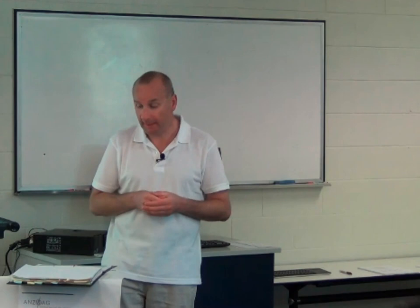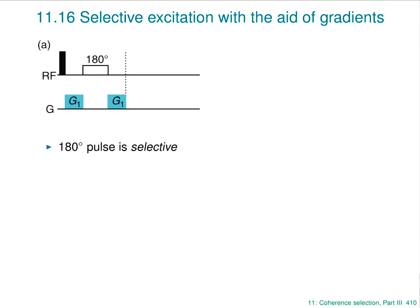Selective excitation is used quite a lot in all sorts of NMR experiments — sometimes to excite a single resonance, as in an NOE experiment, and sometimes to excite a range of resonances, such as just the alpha carbons or just the NH protons in a more sophisticated experiment. So being able to do good selective excitation is important in multiple pulse NMR.